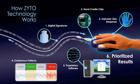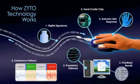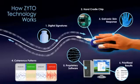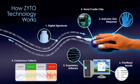After analyzing the data from the hand cradle, the computer displays the data in an easy-to-read graphical interface. The data shows the body's responses ranked in order of priority. Results are optimized and time is used more efficiently by focusing on the body's priorities.